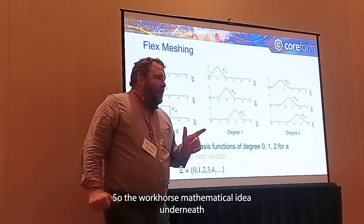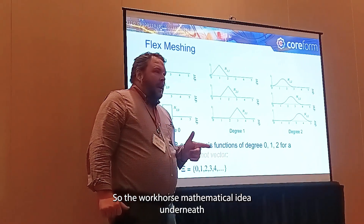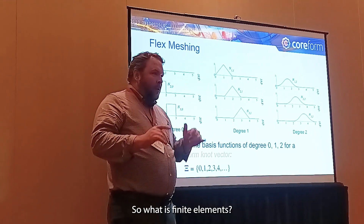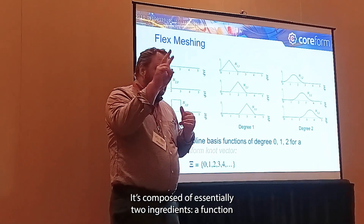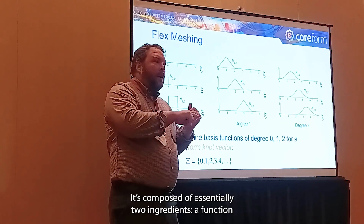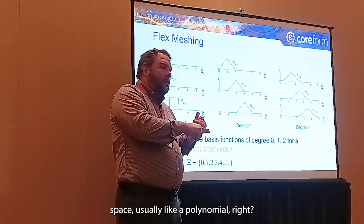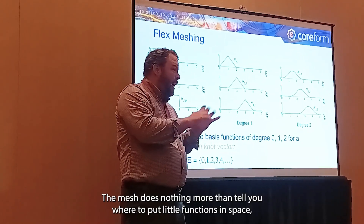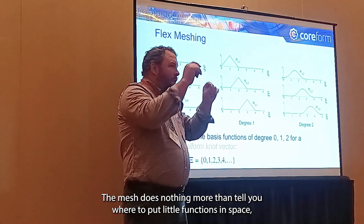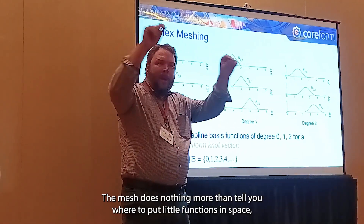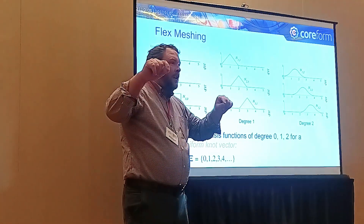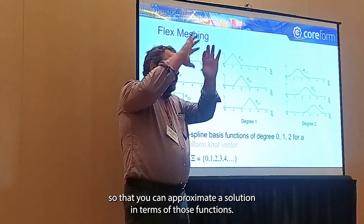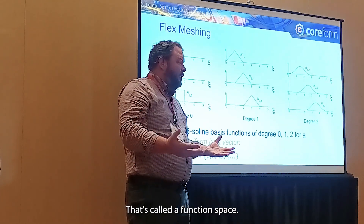The workhorse mathematical idea underneath the method is still finite elements. One of those finite elements is composed of essentially two ingredients. The first is a function space — usually polynomials. The method does nothing more than tell you where to put little functions in space so that you can approximate a solution in terms of those functions. That's called a function space.